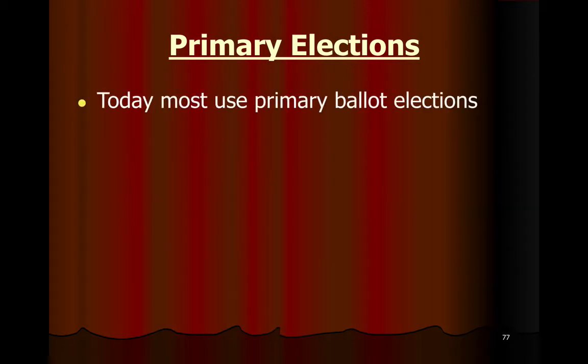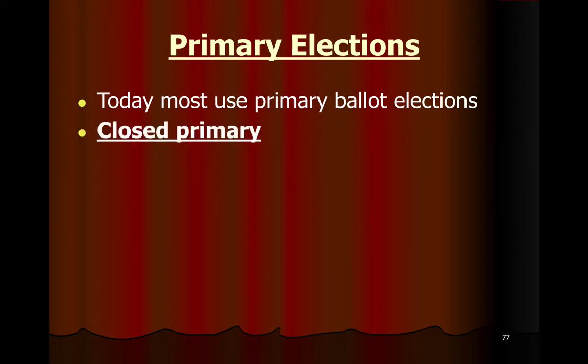Today, most states use what's called a primary ballot election. It basically means you can go in person and fill out a ballot only from candidates listed from one political party — the Democratic Party has a primary, and so does the Republican Party. Third parties might also hold primaries, assuming they have more than one person running for each office, and states get to decide what type of primary it is.